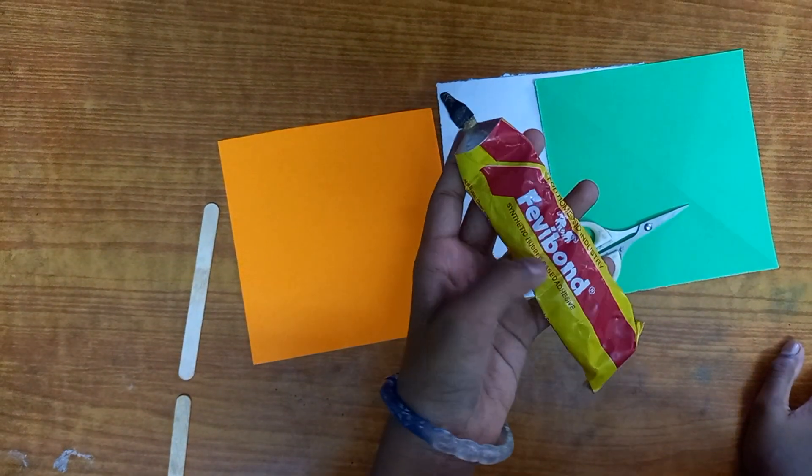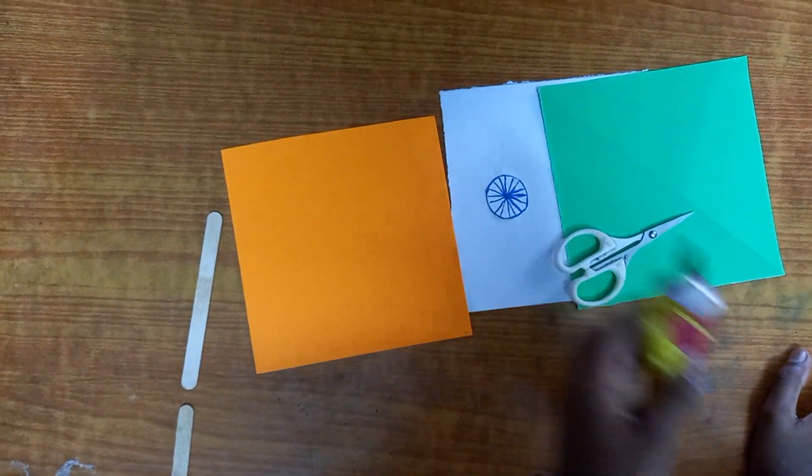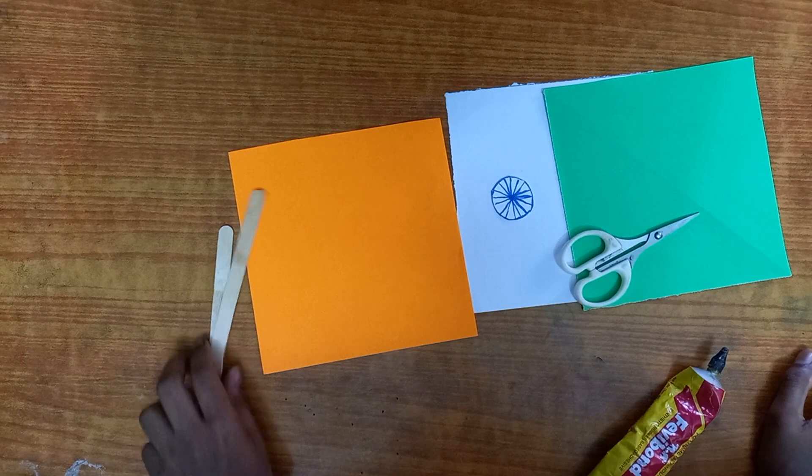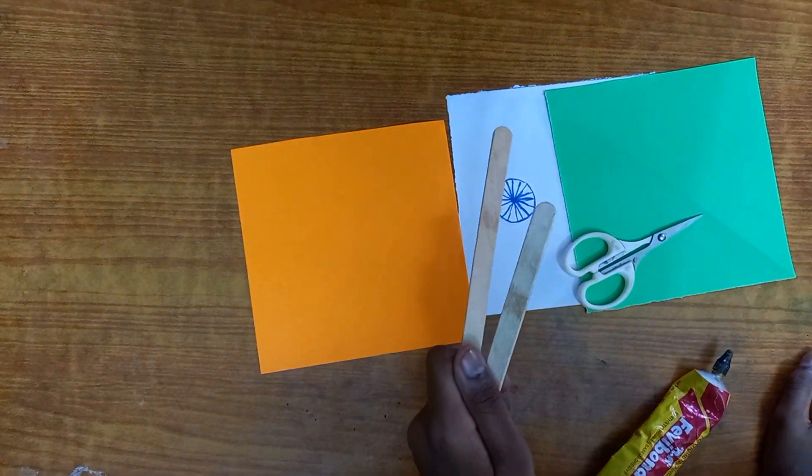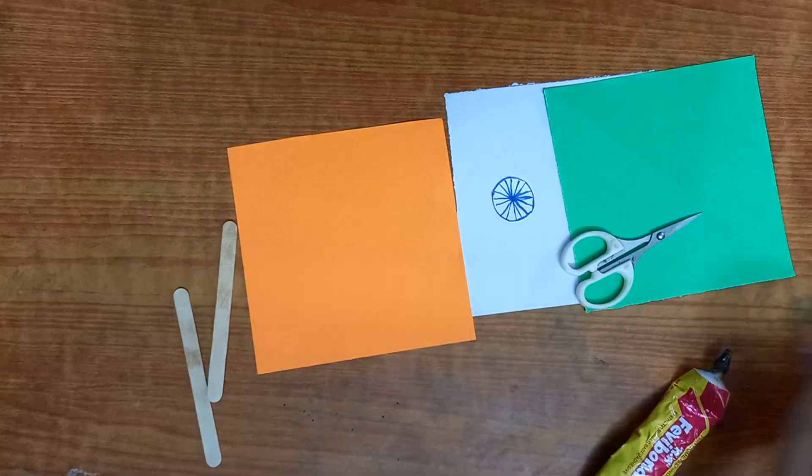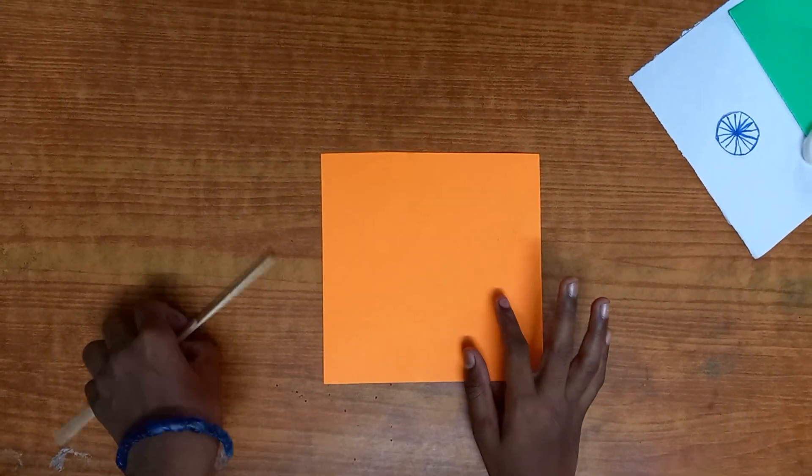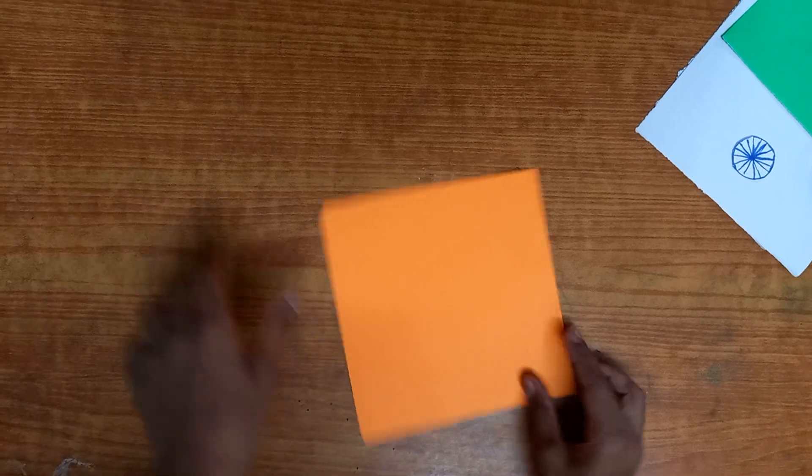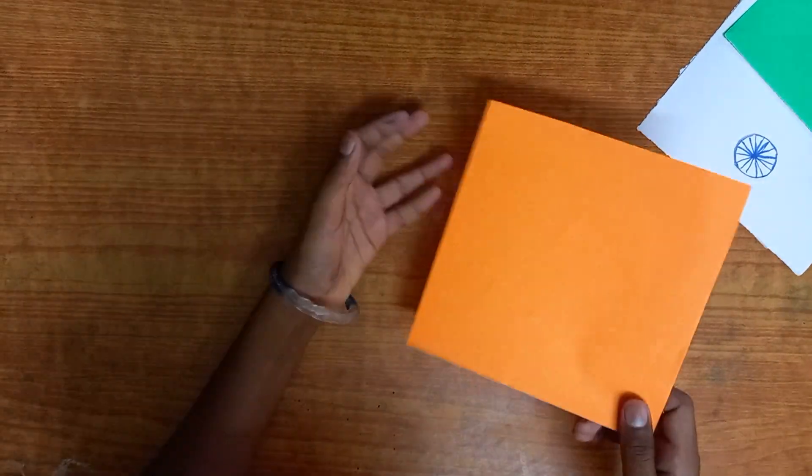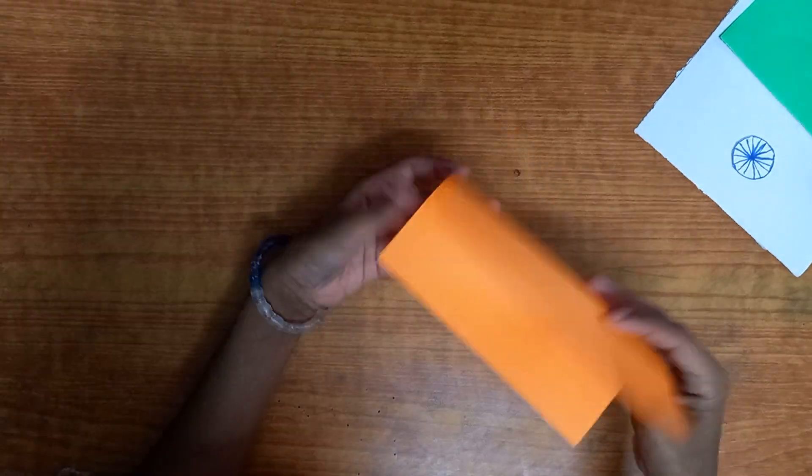a little bit of really strong super glue, and two ice cream sticks. Let's start! So first we'll be using the orange sheet of paper, and what we'll be doing is very simple.